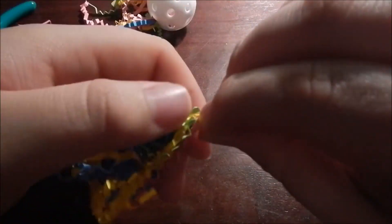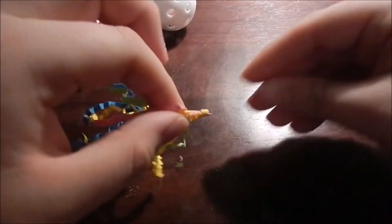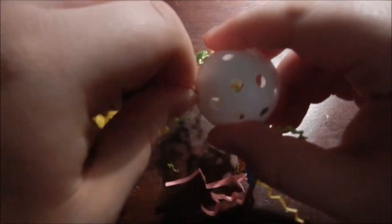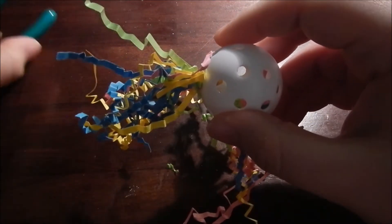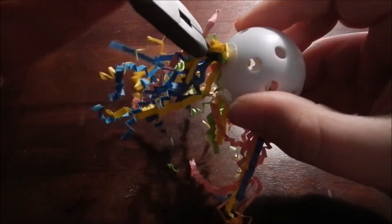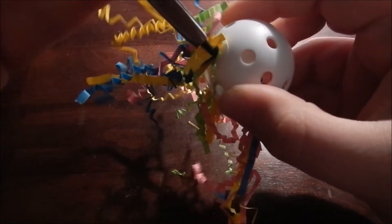Okay, so just gather the crinkle paper and fold it in half. Kind of flatten it, twist it to a point. Like that. Put it in the wiffle ball. And then use the jewelry pliers.